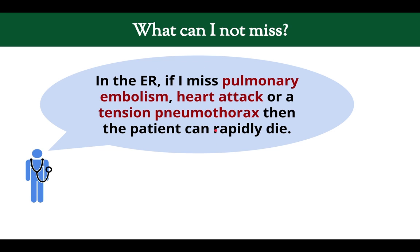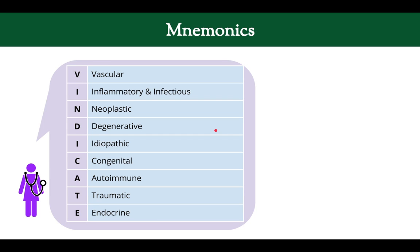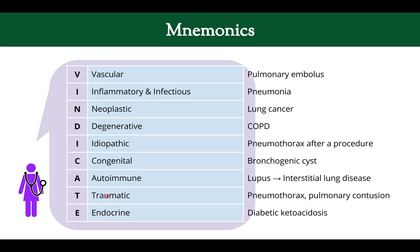Another way to create a differential diagnosis is the use of mnemonics — memory aids. A popular one is VINDICATE, which reminds you to look in different categories. For someone who's short of breath: vascular could be a blood clot in the pulmonary vessels; infectious could be pneumonia; neoplastic could be lung cancer; degenerative could be COPD.